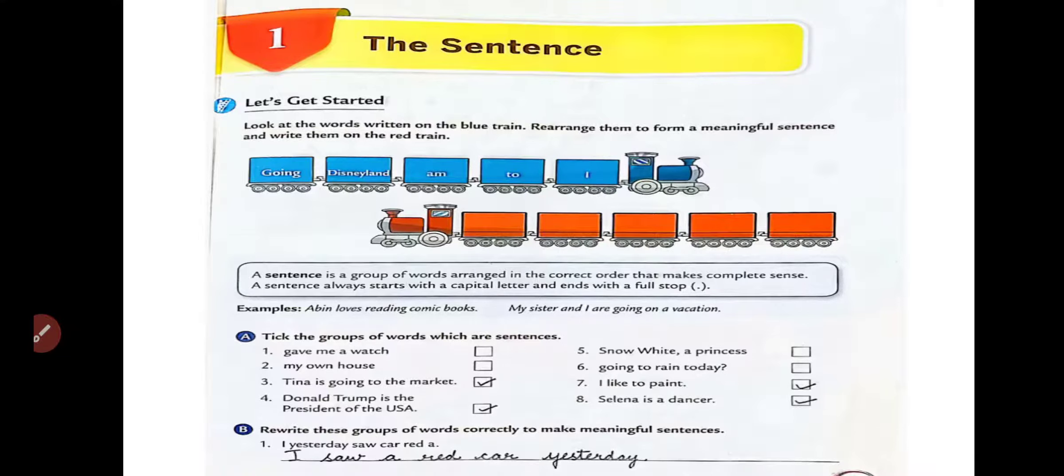Students, I hope you got that. Now, come to your book work. Here, you can see in your book, A sentence is a group of words arranged in the correct order that makes complete sense. A sentence always starts with capital letter and ends with a full stop. The same thing that, a sentence always creates a meaningful sense. And we start the sentence with capital letter and in the end, we have to use full stop.